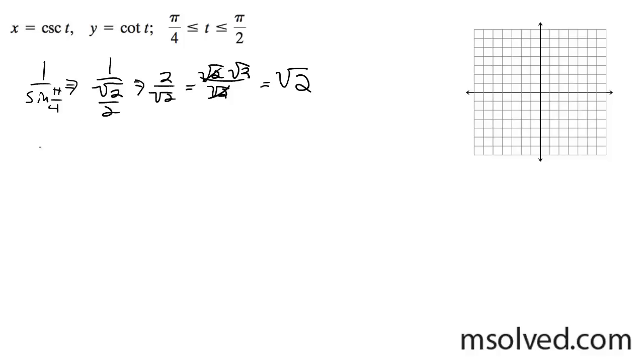And then for the cotangent of pi over 4, it's just going to be 1. And then I can just go ahead and map this. So pi over 4 is going to give me root 2 and then 1.